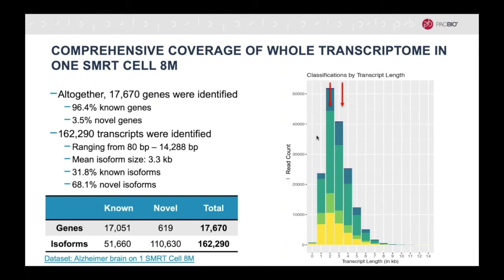As you can see on the chart to the right, the average transcript size is around 2 KB, with a mean of 3.3 KB. Of all the isoforms identified, 32% were known and the remainder are novel, again highlighting the difficulty for short reads to fully characterize transcripts.